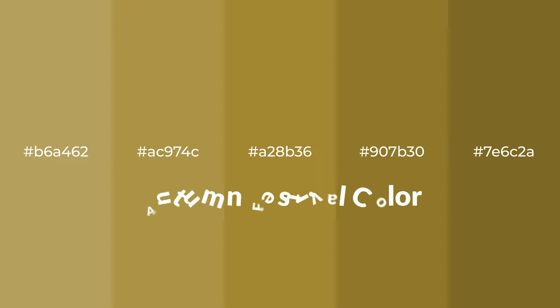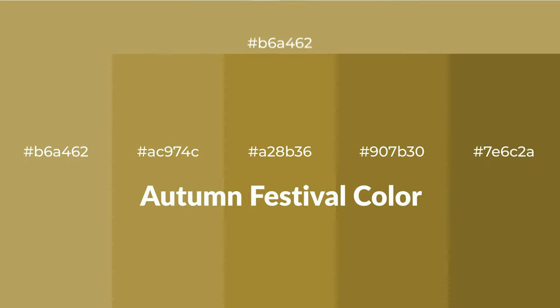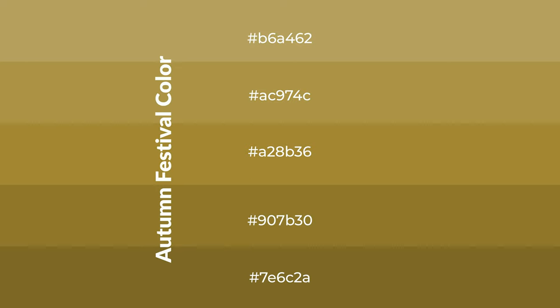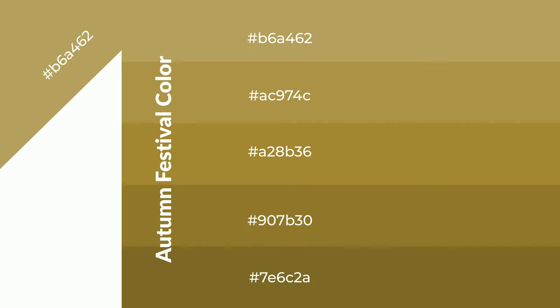Warm shades of Autumn Festival color with yellow hue for your next project. To generate tints of a color, we add white to the color. Tints create light and exquisite emotions. To generate shades of a color, we add black to the color, and it is used in patterns, 3D effects, and layers. Shades create depth and drama.